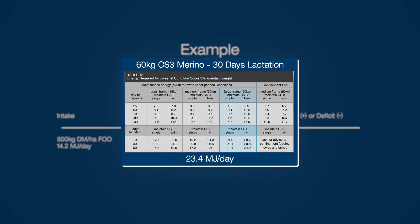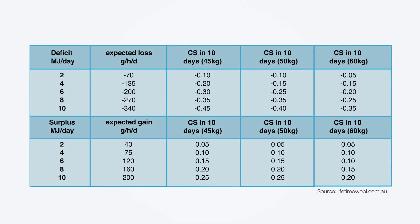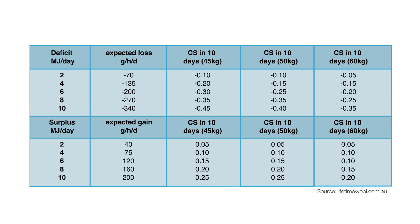Our ewe requires 23.4 megajoules per day but is only getting 14.2 per day from the pasture. That's an energy deficit of 9.2 megajoules per day. This means that the ewes will be losing weight at a rate of 0.25 to 0.35 of a condition score for a 60 kilogram ewe.